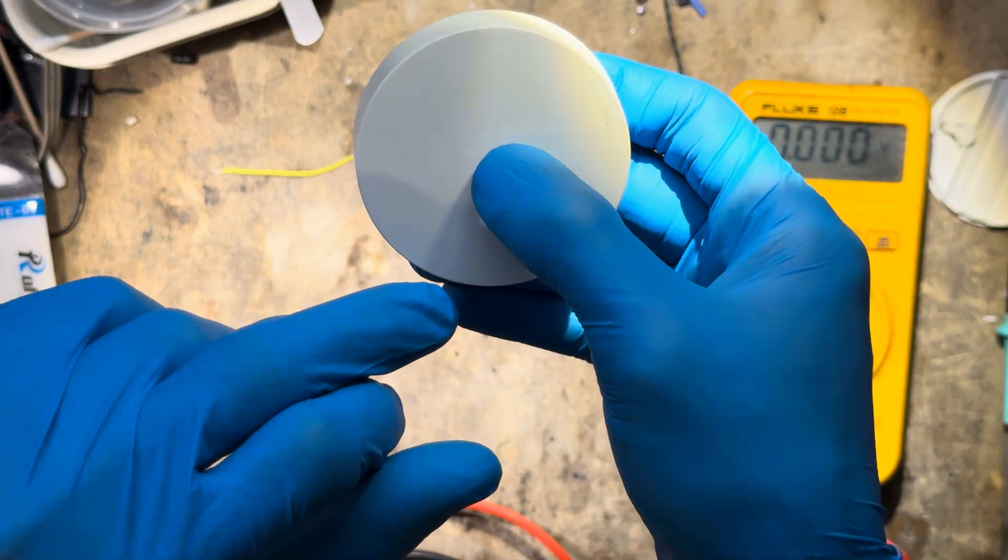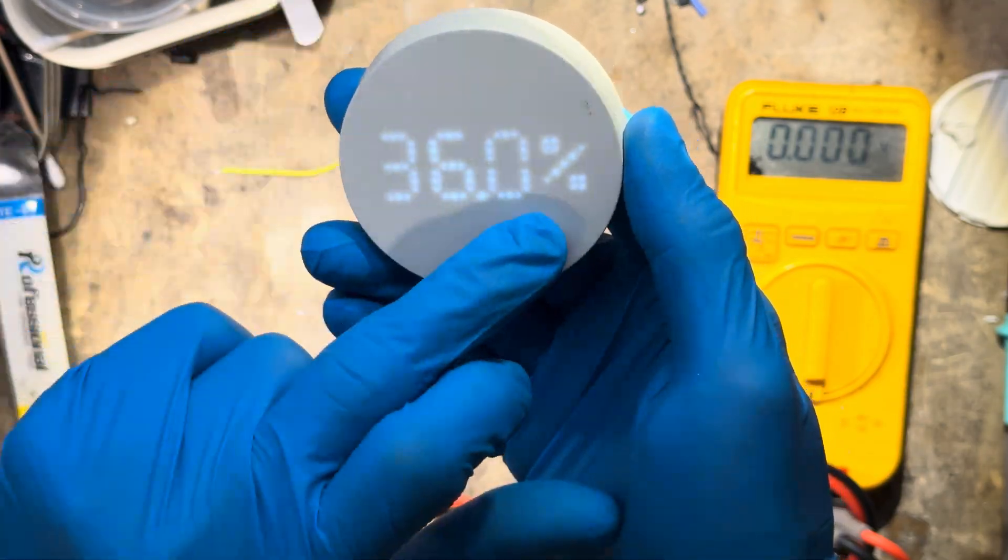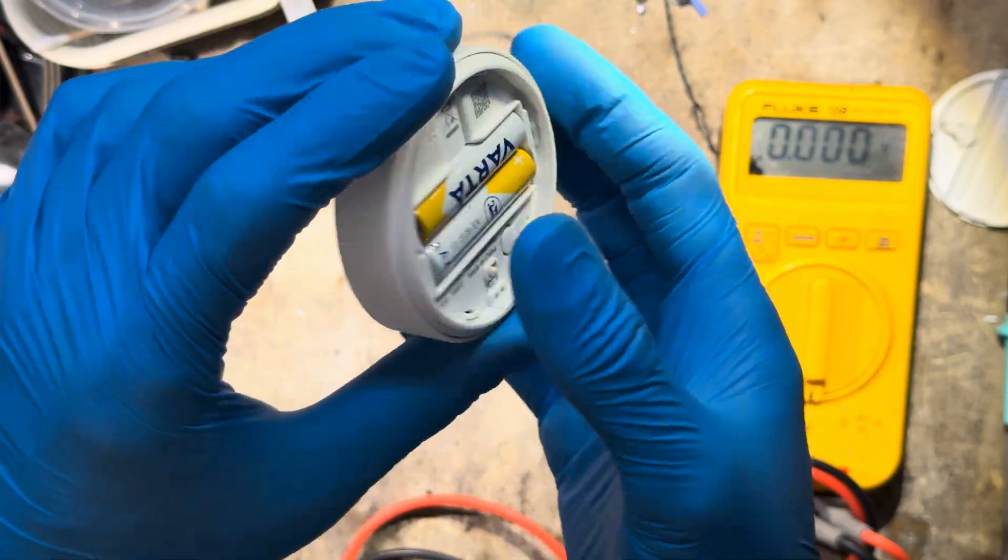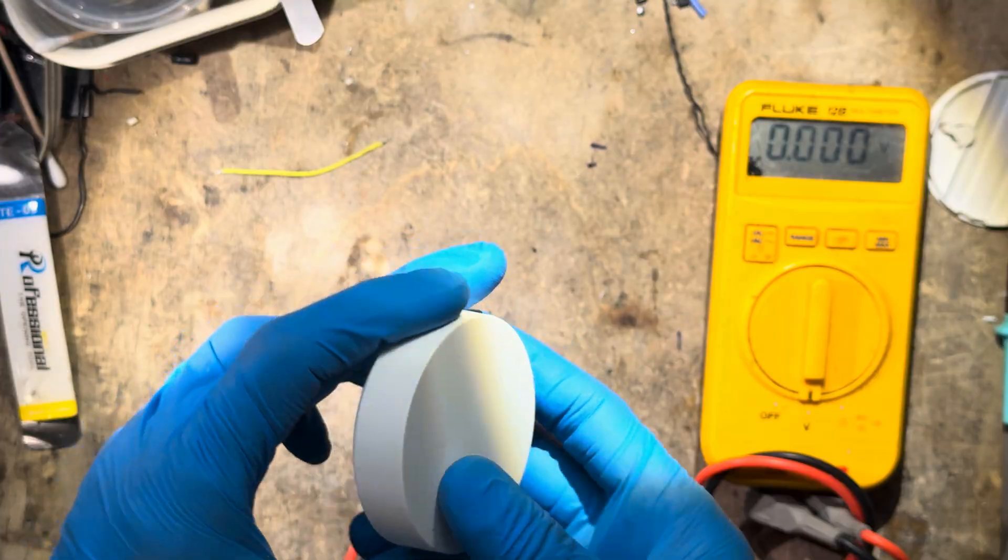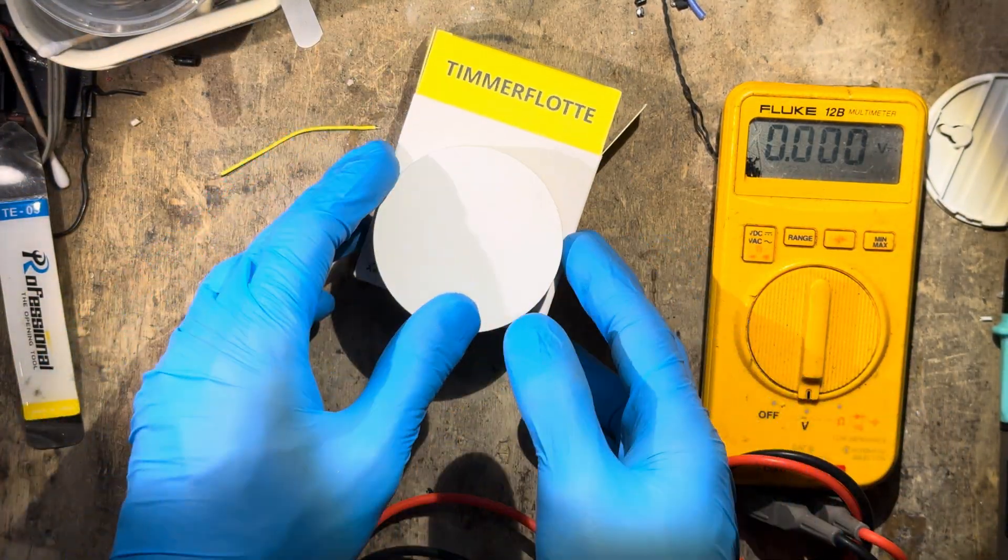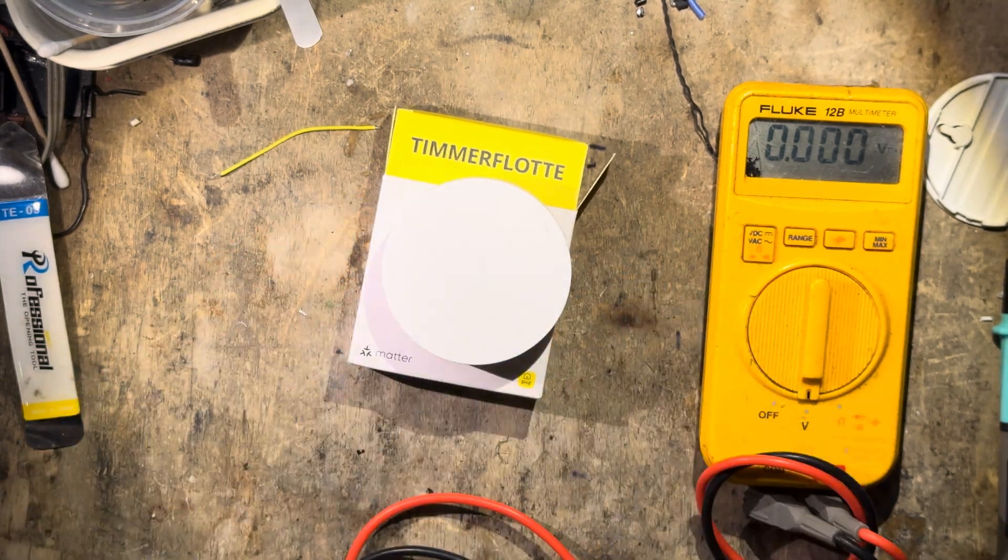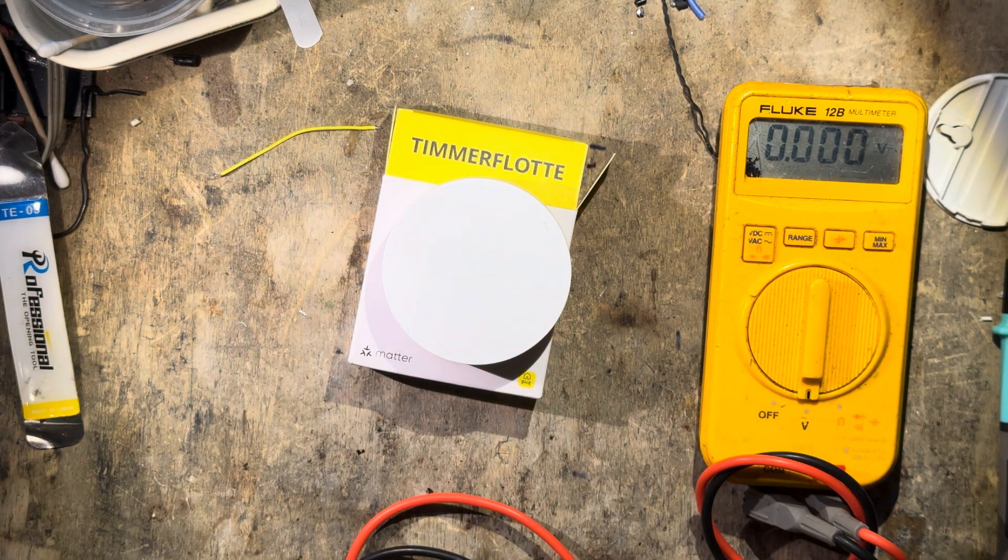And if you push it, there it is. So it's also nice, easy, and not easy to read right now. So this is a quick first look and teardown at the IKEA Timmerflotte. Let me know if we should reverse engineer it. Thanks a lot for watching and see you later. Bye.